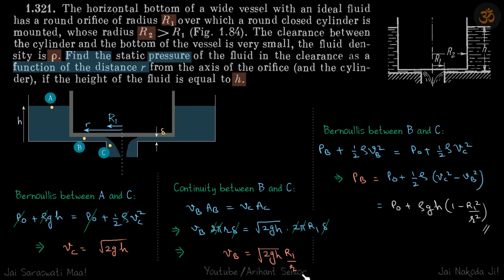Now we can use Bernoulli between B and C because we already know the velocities at B and C. B and C are at the same height, so pB + ½ρvB² = p0 + ½ρvC². We'll put the values of vB and vC here and we'll get our answer.